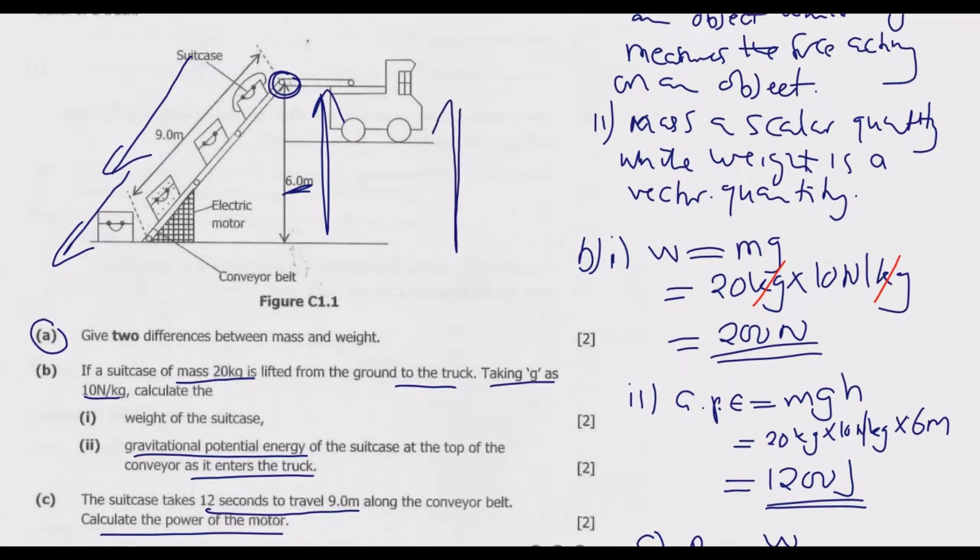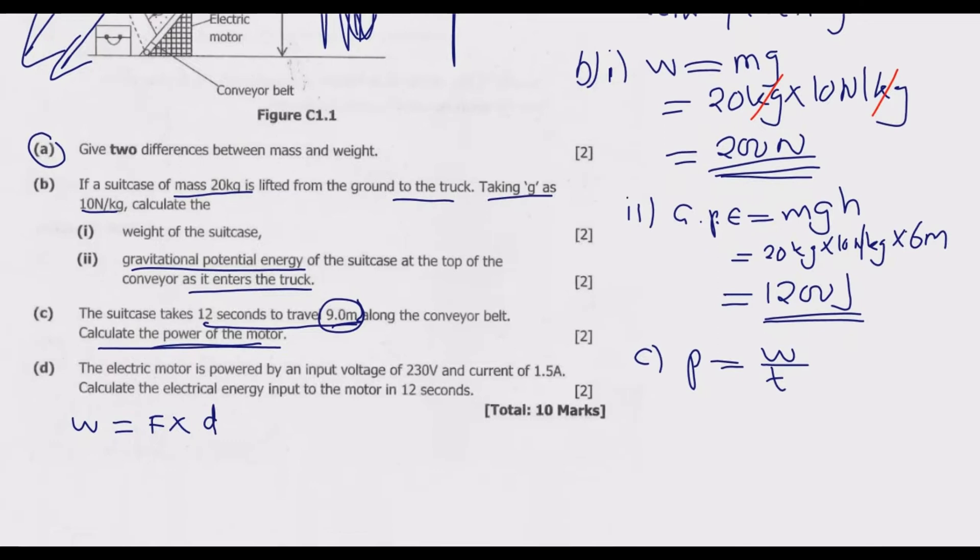The motor is moving it in this direction along the conveyor. As opposed to gravitational potential energy which depends on vertical height, in this case the 9 meters will be the distance. The force remains equal to the weight, which was 200 Newtons. Work done is force multiplied by distance moved in the direction of the force. The motor is moving it along the belt, not downward. That's why we use the 9 meters distance to find work done.